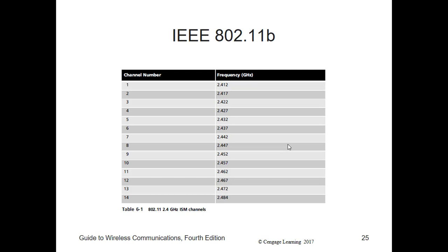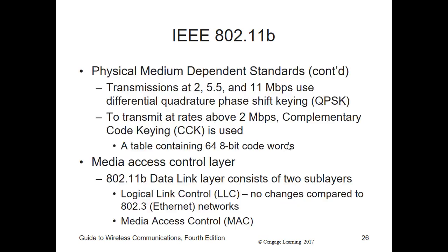Bear in mind that these frequencies and their associated limitations may change over time as a result of work by the ITU-T with governments in various countries. By employing dynamic rate selection, the PMD on an AP automatically adjusts the transmission rate from 1 to 2 to 5.5 or 11 Mbps and back down again depending on signal strength. DSSS uses an expanded redundant code called the Barker code to transmit each data bit — the Barker code is used when 802.11b is transmitting at 1 or 2 Mbps.